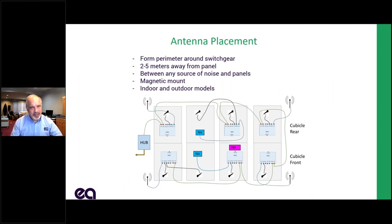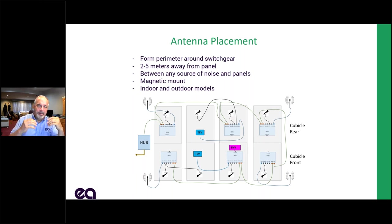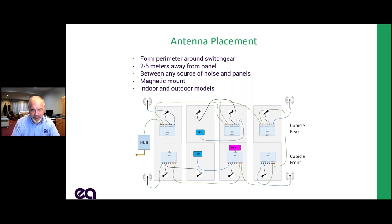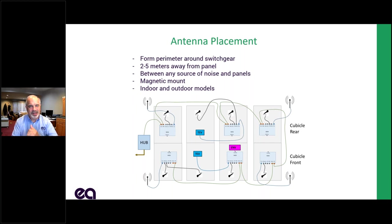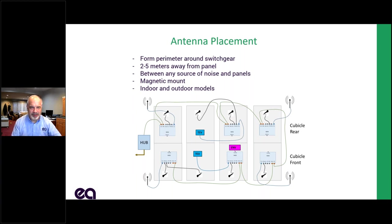With all sensors placed, we need to look at antennas. We want them outside the gear, far enough away to provide good coverage — in a range of about two to five meters away from the corners. If you've got a long row of switchgear, you might want a couple in the middle as well. You want to form a perimeter so that any noise from any source hits the antenna before it hits the switchgear. Our antennas are magnetic mount, with indoor and outdoor models.